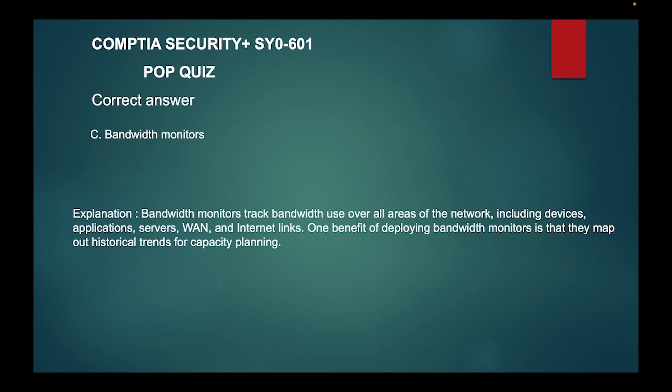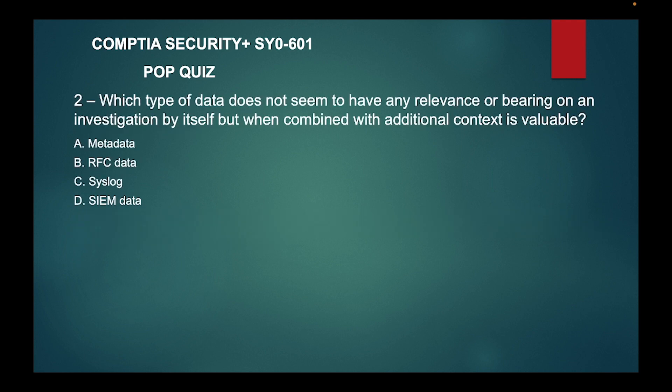The correct answer is c) bandwidth monitors. Bandwidth monitors track bandwidth use over all areas of the network, including devices, applications, servers, and internet links. One benefit of deploying bandwidth monitors is that they map out historical trends for capacity planning.